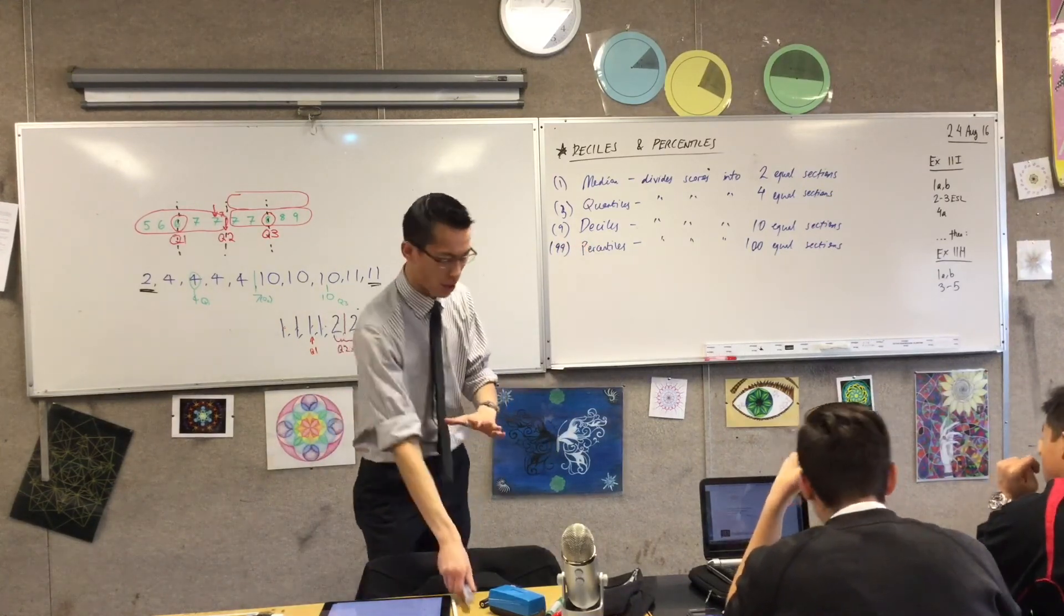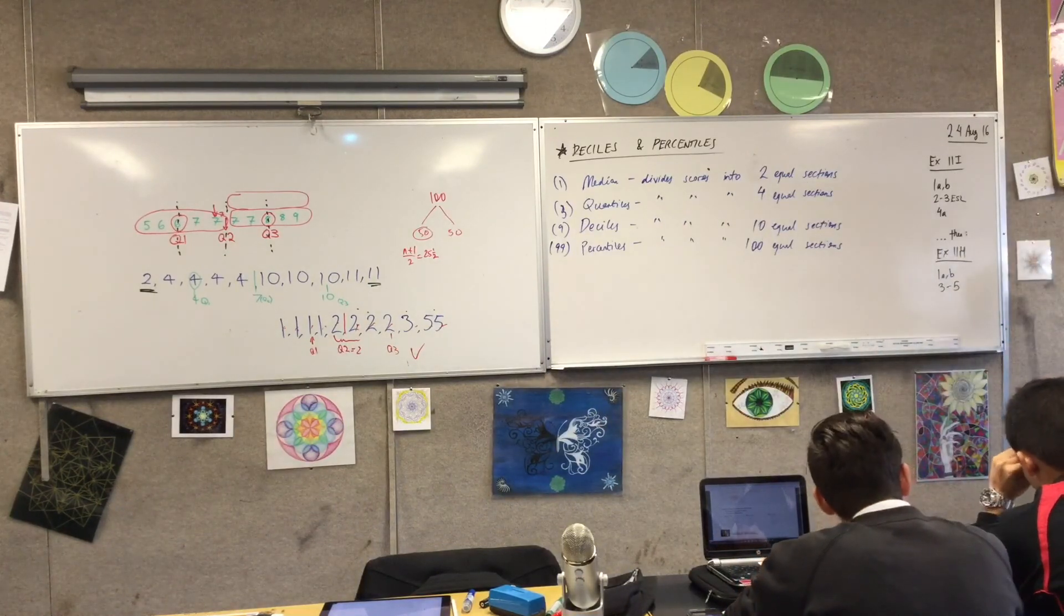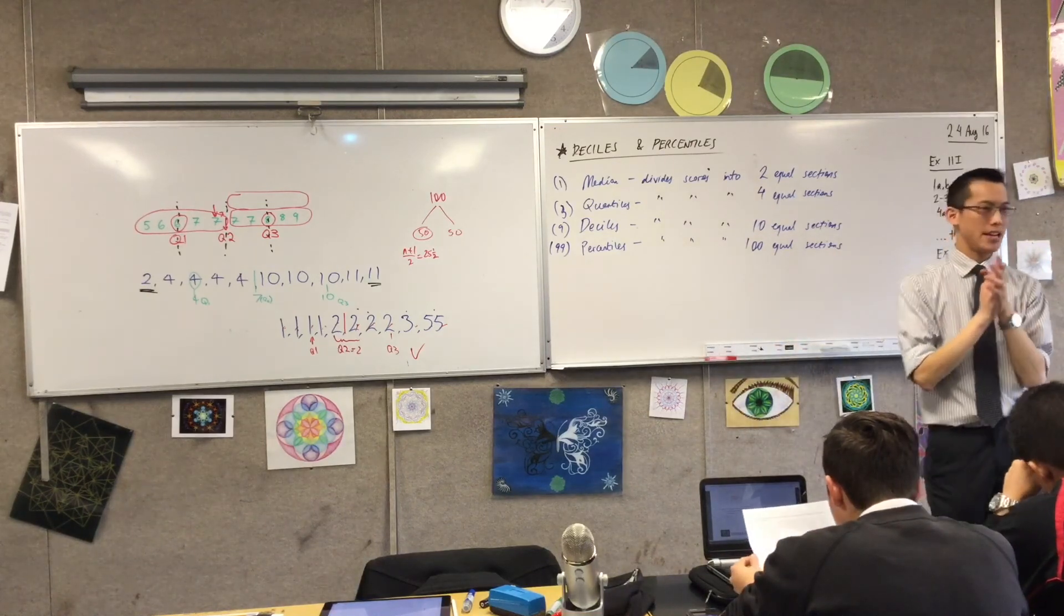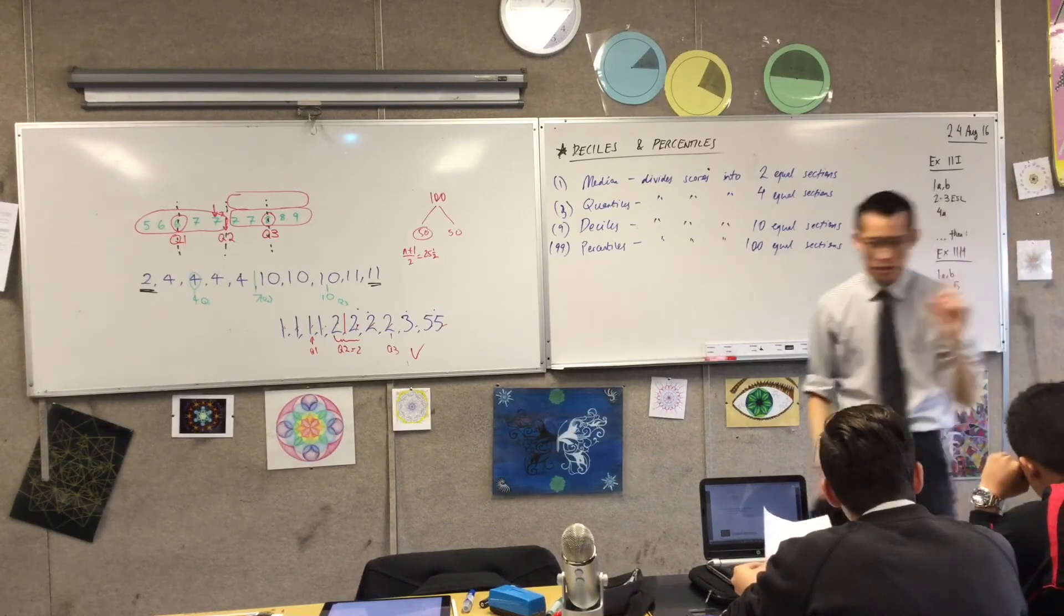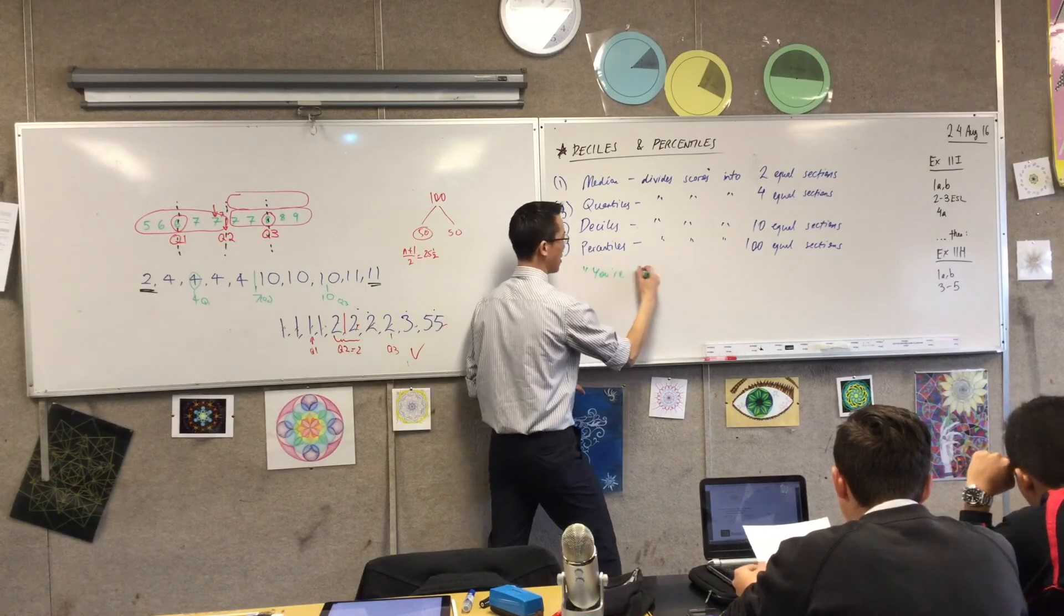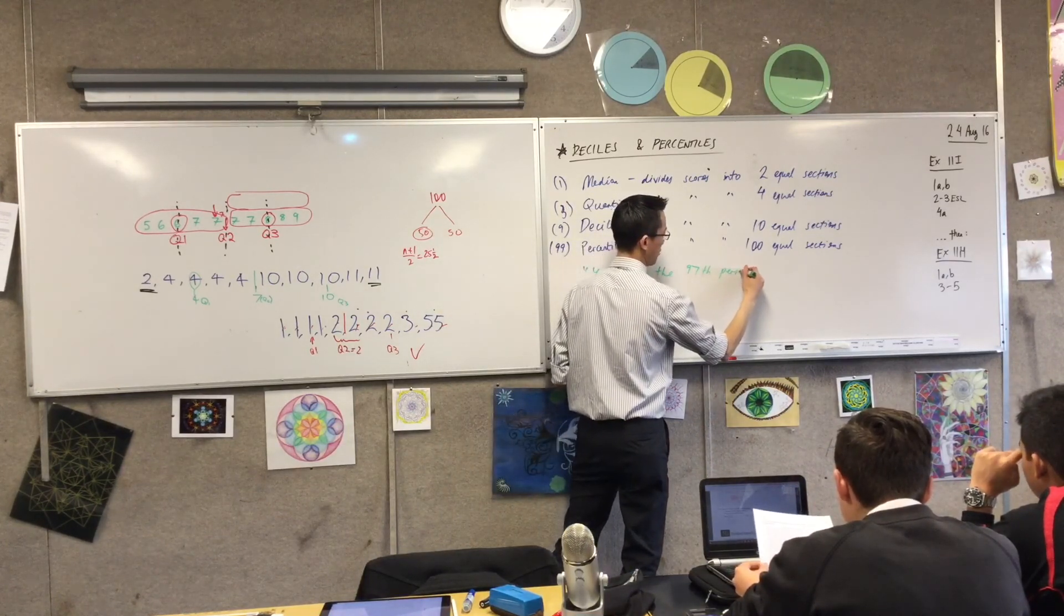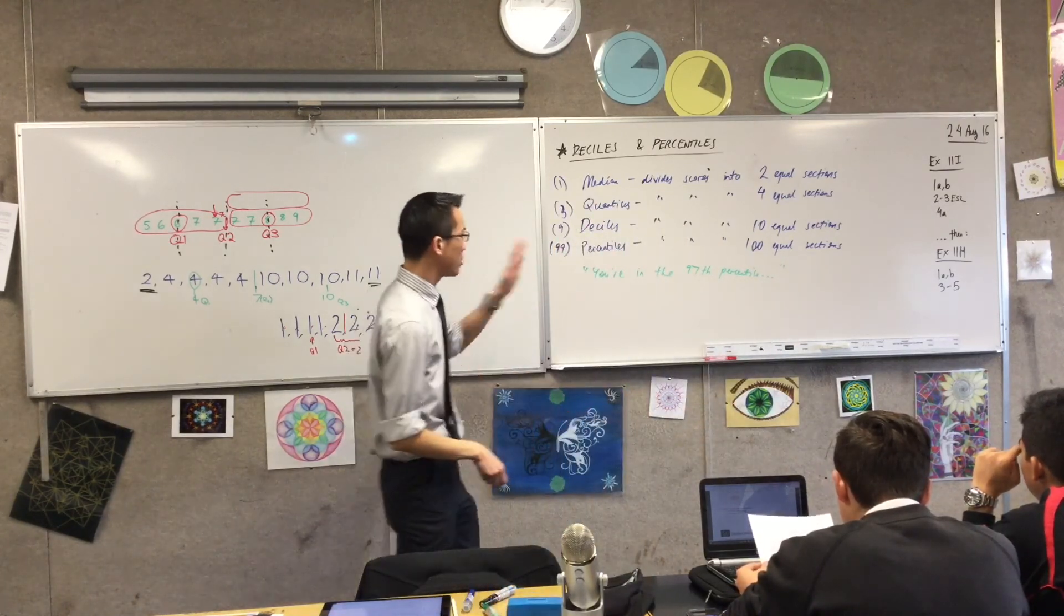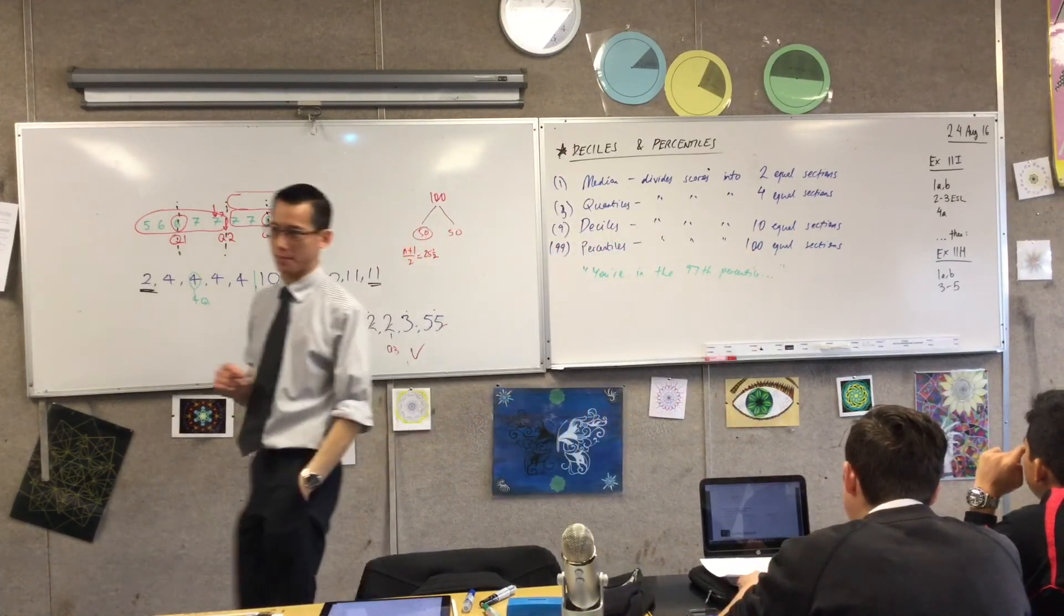So put your pens down, and I want you to think with me. The way we would use this language is to say, oh, you guys are in the 97th percentile of, say, household income. Now what does that mean? Don't write this down here, just think about this sentence with me. You're in the 97th percentile.